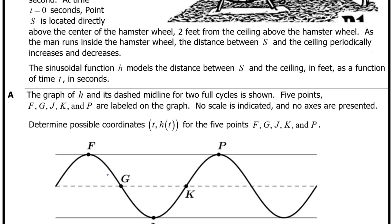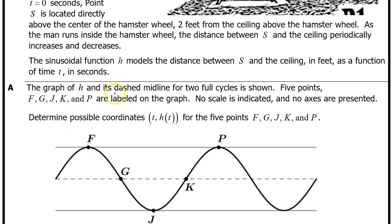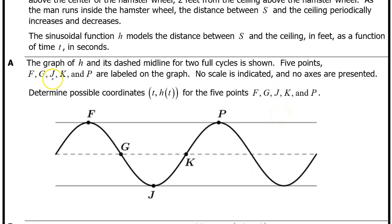Part A. The graph of h and its dashed midline for two full cycles is shown. Five points F, G, J, K, and P are labeled on the graph. No scale is indicated and no axes are presented. Determine possible coordinates (t, h(t)) for the five points F, G, J, K, and P.